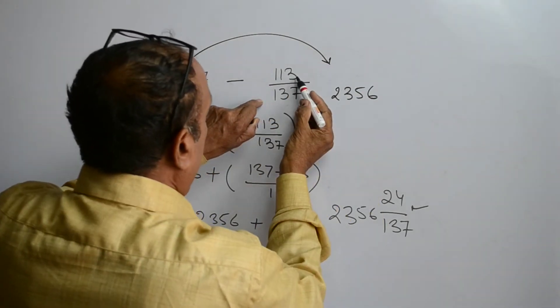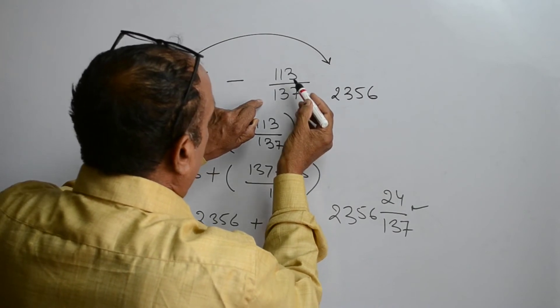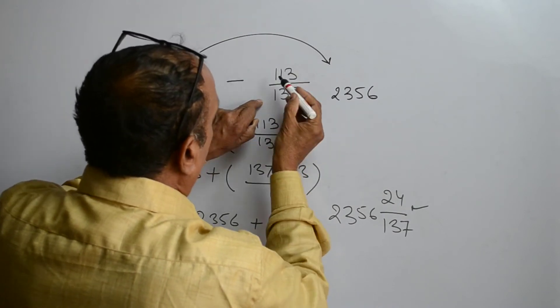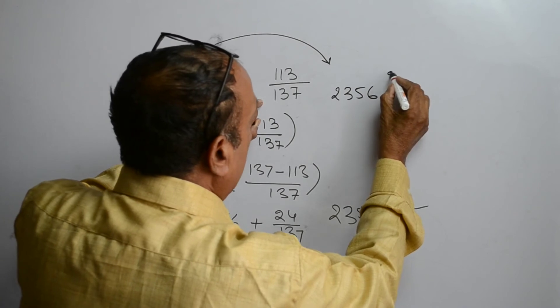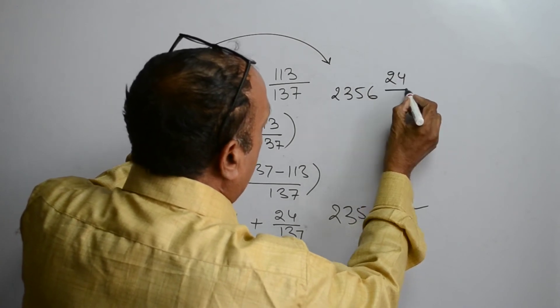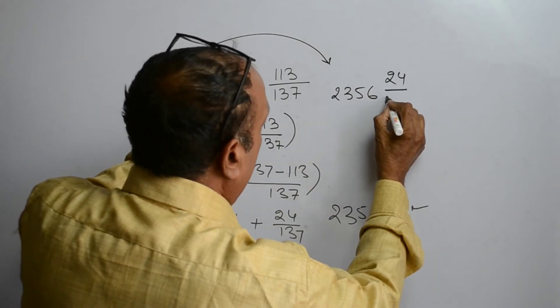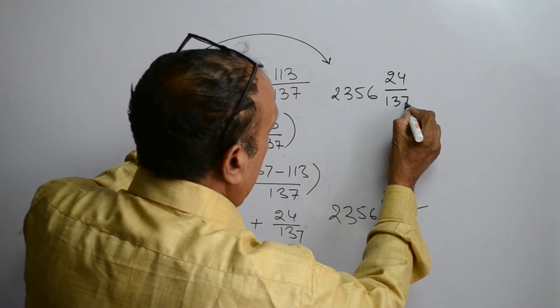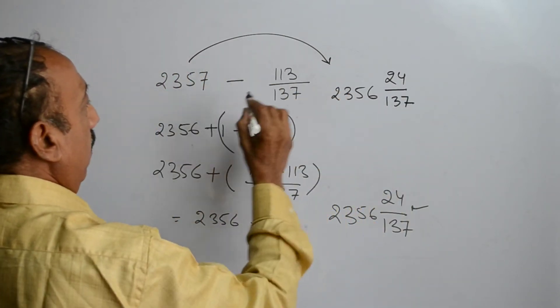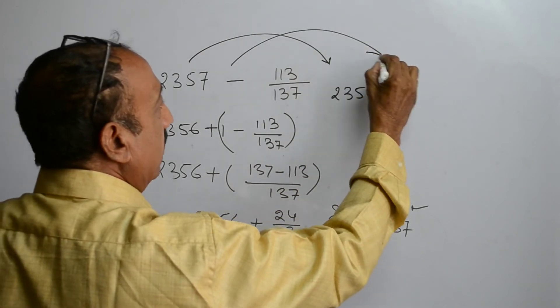Now deduct the numerator from the denominator. 137 minus 113 is 24, and write the denominator as it is. So we can solve this problem just in one step.